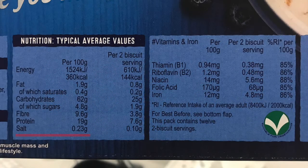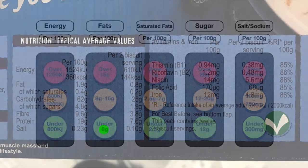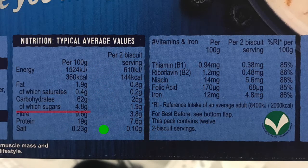Let's have a look at the amount of salt in Weetabix — 230mg of salt. Now let's look at the traffic light for salt. 230mg is less than 300mg, so that is a green light. How about sugar? 4.8g of sugar is also a green light.